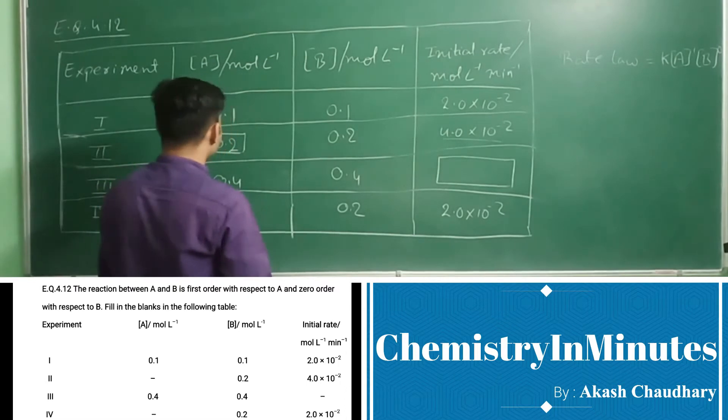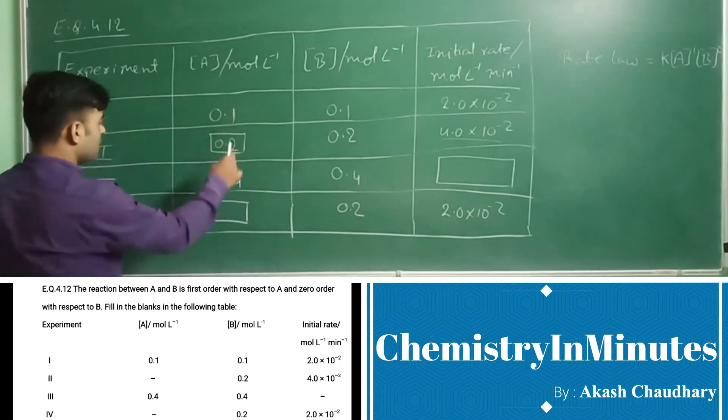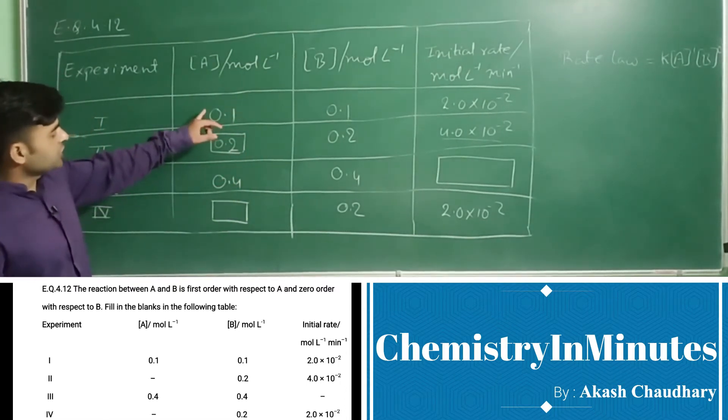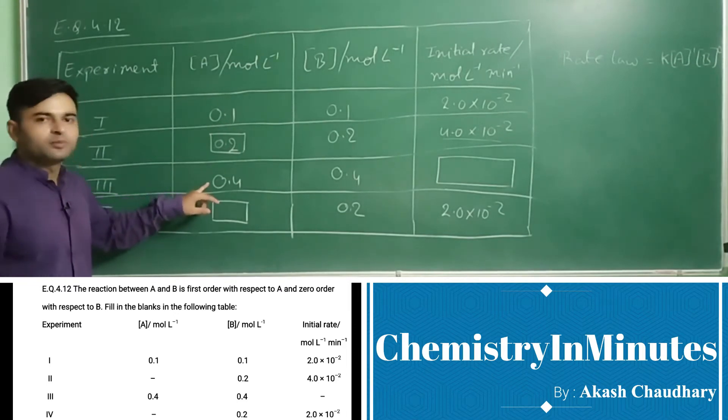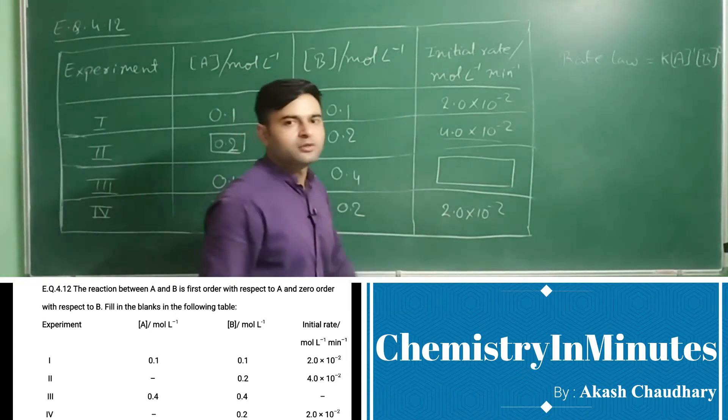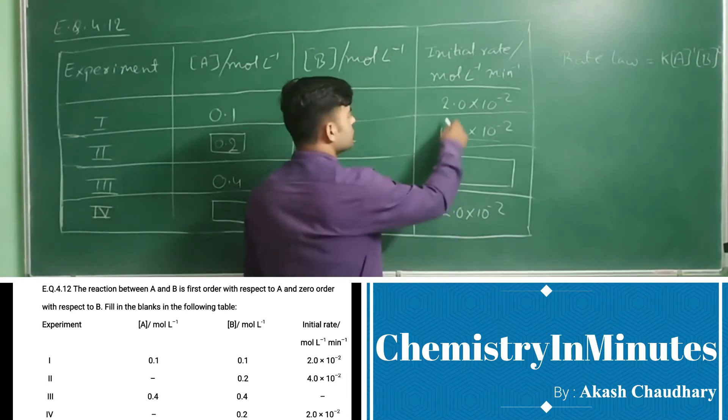Now if we see this first row and third row, the concentration of A has become 4 times. So the rate of reaction will also become 4 times the initial rate.